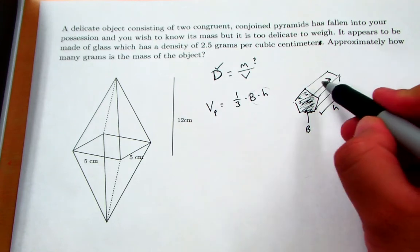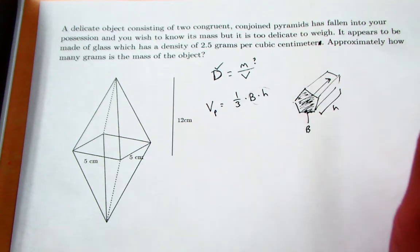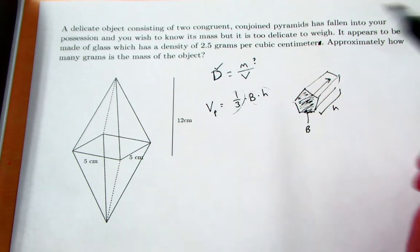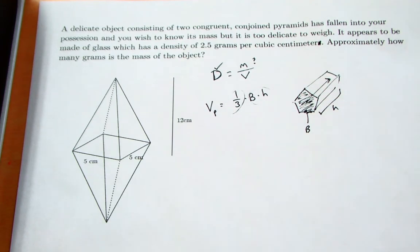Well, the reason I mention that, a pyramid with the same base, just like a cone and a cylinder, a pyramid with the same base would have one-third of the volume. So one-third base area times height.